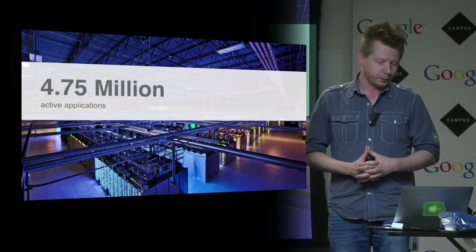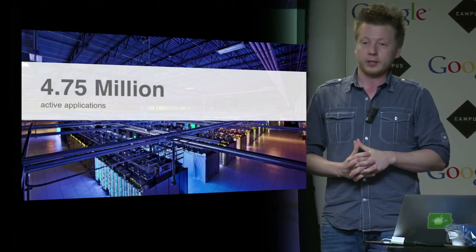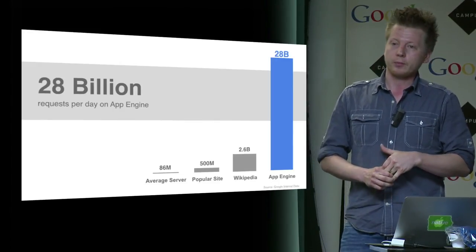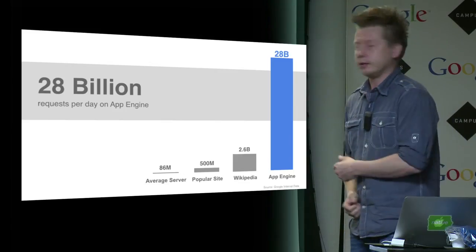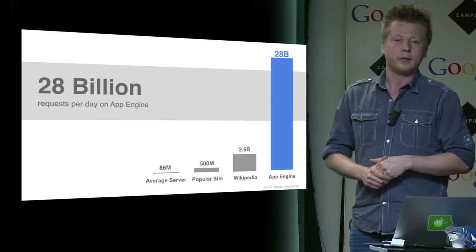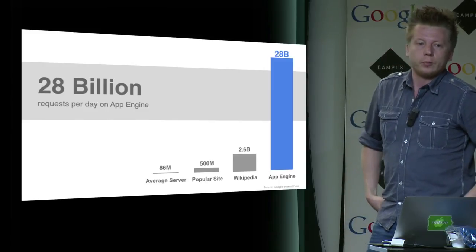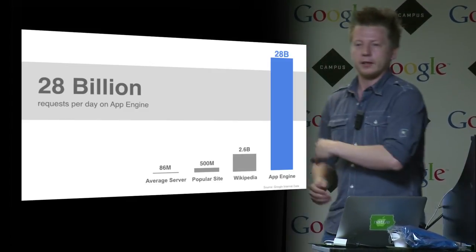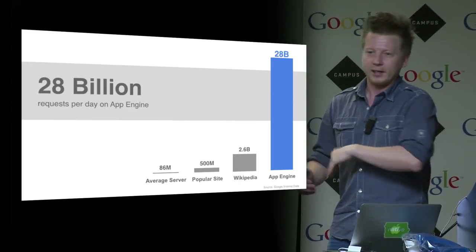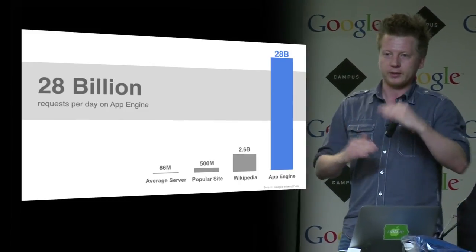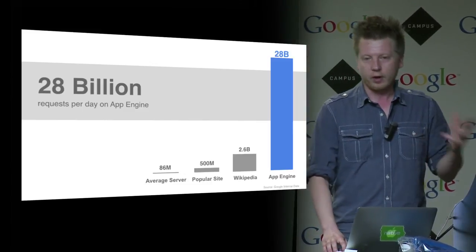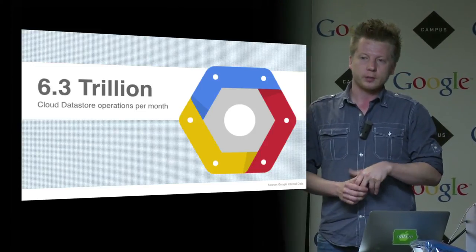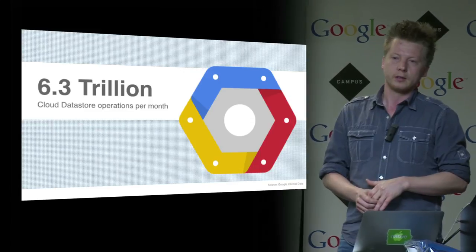Just to give you some numbers: there are 4.75 million active applications running on our Cloud Platform. 28 billion requests are processed by App Engine every day. For context, Wikipedia handles 2.6 billion requests per day — that gives you an idea of the volume of traffic being handled by Cloud Platform. Our data store processes 6.3 trillion operations per month. That's a huge number.